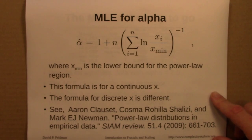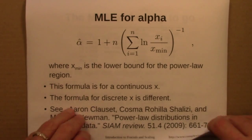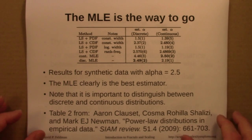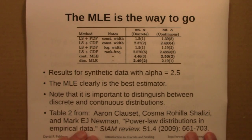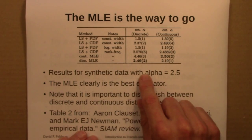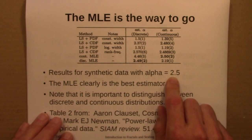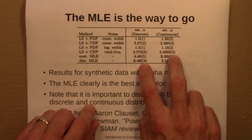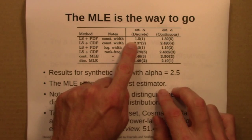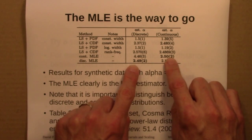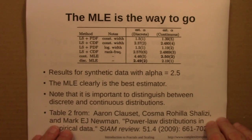Most of this is written up in a nice paper by Aaron Clauset, Cosma Shalizi, and Mark Newman. Results from that paper strongly support using the maximum likelihood estimator. For synthetic data sets sampled from a power law with alpha of 2.5, only the MLE produced accurate results, while least squares sometimes gave values as wrong as 1.5 or 1.39. It's also important to distinguish discrete from continuous data, as they have different mathematical properties and different MLE formulas.